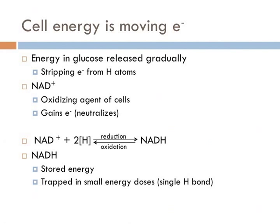Energy in cells is generated by moving electrons from one chemical to another, releasing energy in food molecules like glucose gradually instead of in big bursts. NAD+ is the molecule in cells that acts as an oxidizing agent. As glucose is decomposed, it strips electrons from it, combining NAD+ with a hydrogen atom to synthesize NADH. NADH is like a loaded spring, with stored energy trapped in small doses in the form of single hydrogen bonds, which create the formation of ATP from ADP and a phosphorus atom.